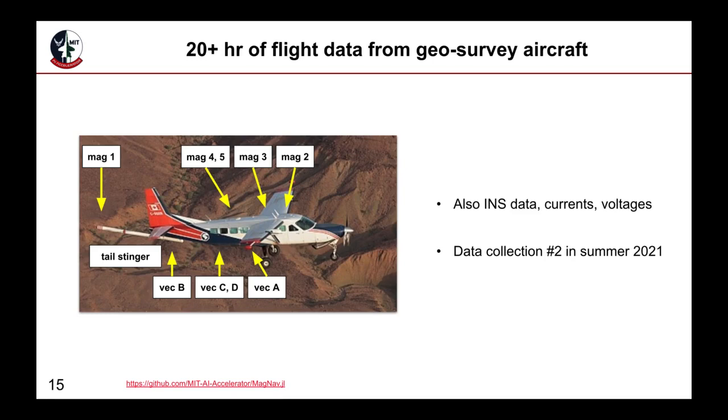Finally, a rather unique flight dataset is linked within the repo. This data was collected by Sander Geophysics near Ottawa, Canada in the summer of 2020. Flights were performed at different altitudes with a variety of maneuvers, and magnetic measurements were taken in many locations throughout the aircraft, as shown in the image. In addition to the magnetic data, also INS data and voltage and current measurements were provided.